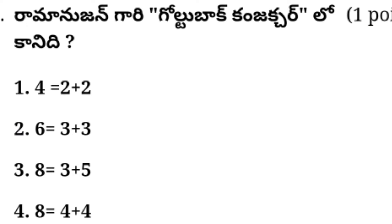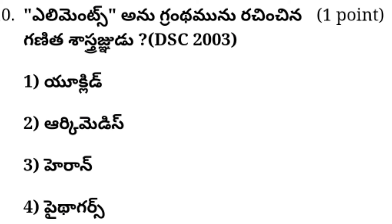Ramanujan's Goldbach Conjecture law: Option one: 4 equals 2 plus 2. Option two: 6 equals 3 plus 3. Option three: 8 equals 3 plus 5. Option four: 8 equals 4 plus 4. Answer in the comment box. The answer is Option four — 8 equals 4 plus 4. This is the Goldbach Conjecture.